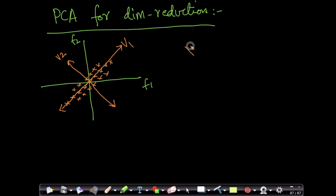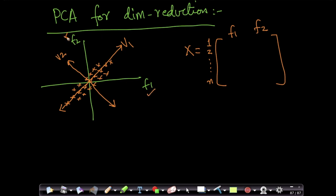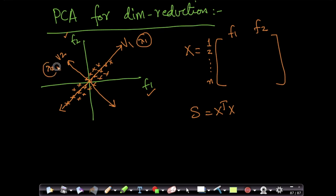Imagine a dataset x is two-dimensional with n points and two features. I computed the eigenvalues and eigenvectors of S, which is x-transpose x, and got v1 and v2. v1 is the top eigenvector corresponding to lambda_1, and v2 is the second eigenvector corresponding to lambda_2. This is a 2D dataset, and now I want to convert it into a 1D dataset.